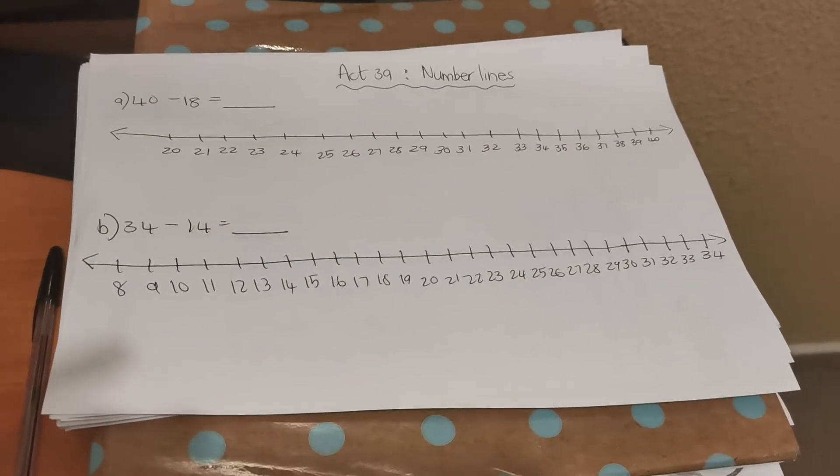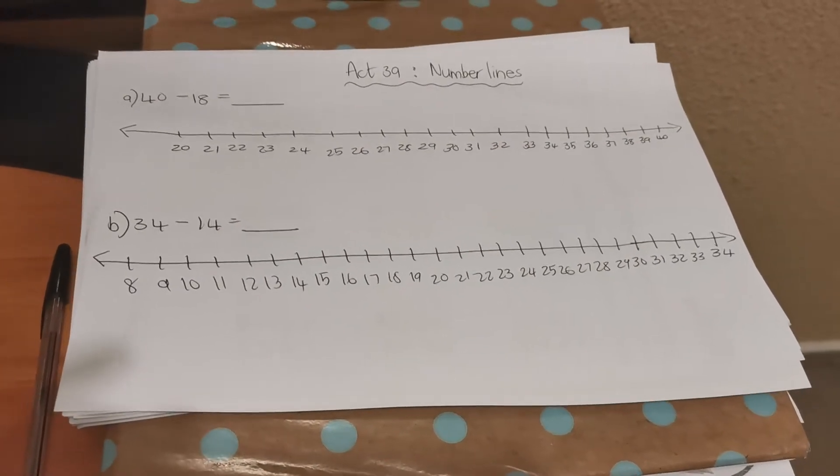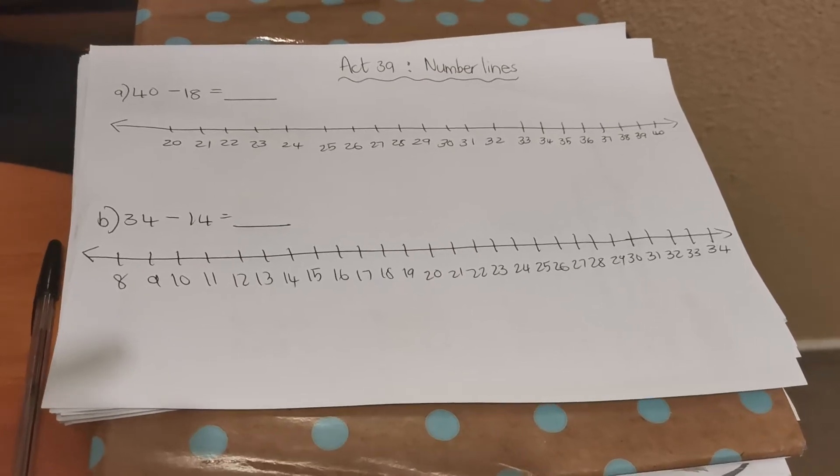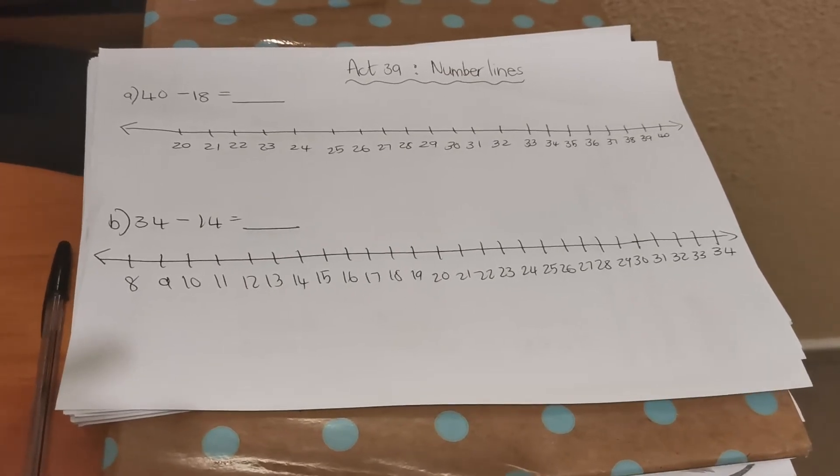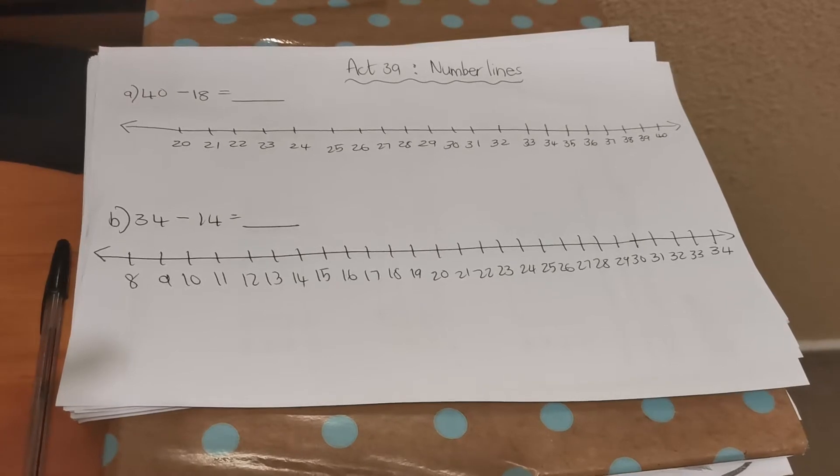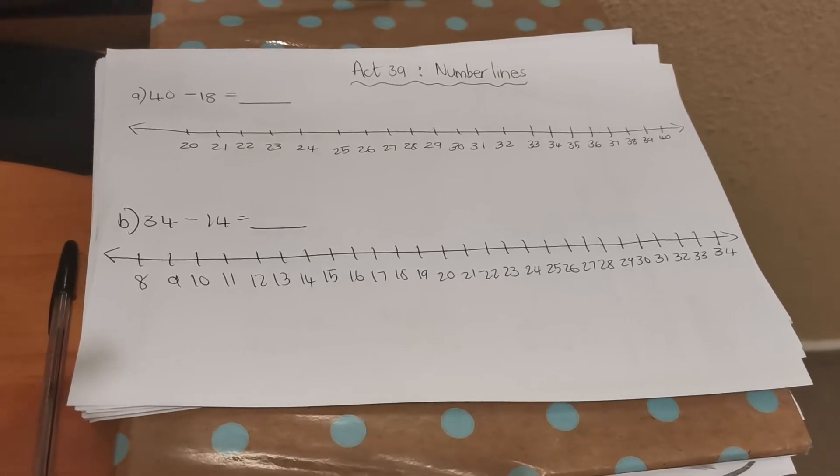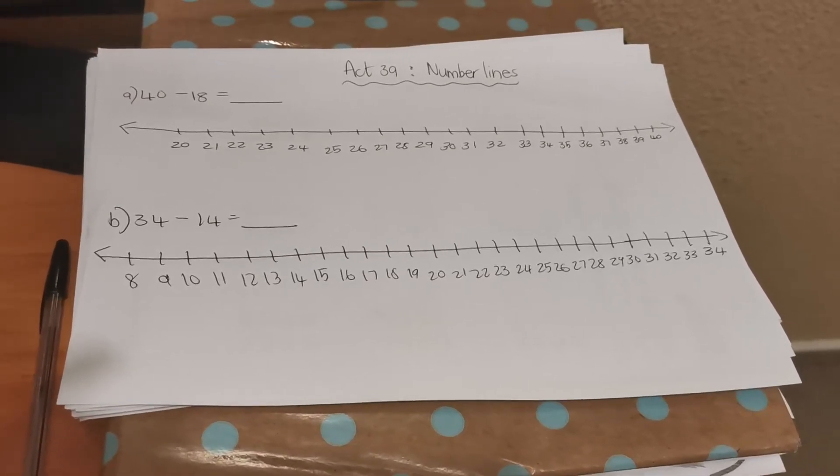Hi Grades, this is activity 39 for Tuesday, subtraction using number lines. Remember when you do addition with number lines, you count forwards. So with subtraction on number lines, you're going to count backwards.